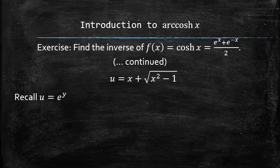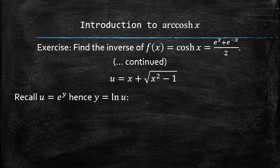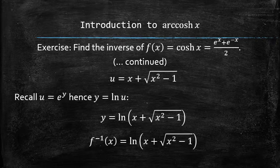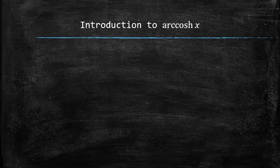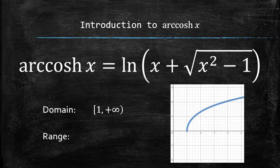Since u is e to the power of y, then y is the natural logarithm of u. We solve for y and finally get the following result. So we found the equation for the hyperbolic arc cosine function. The domain is all the numbers greater than or equal to 1 and the range is all the non-negative numbers.